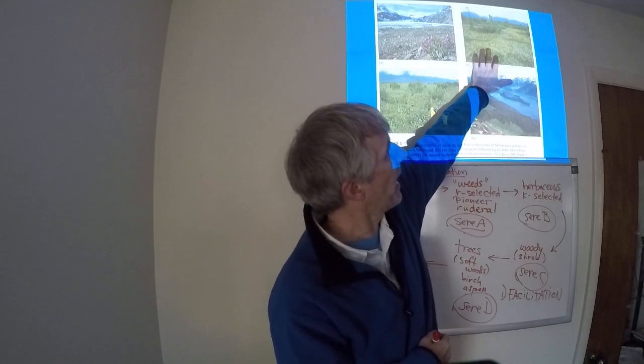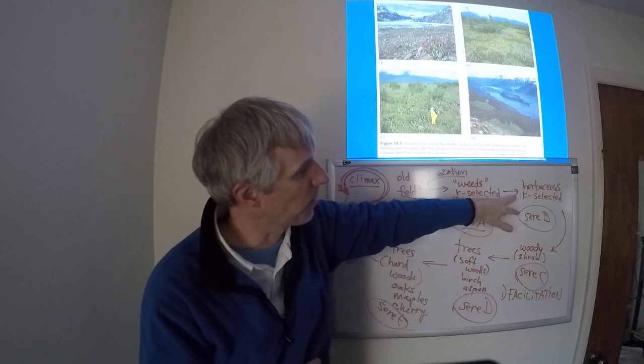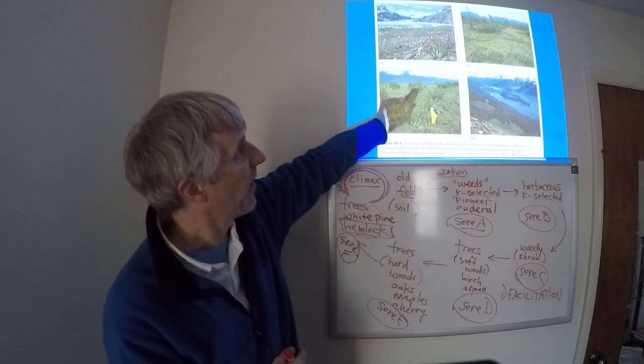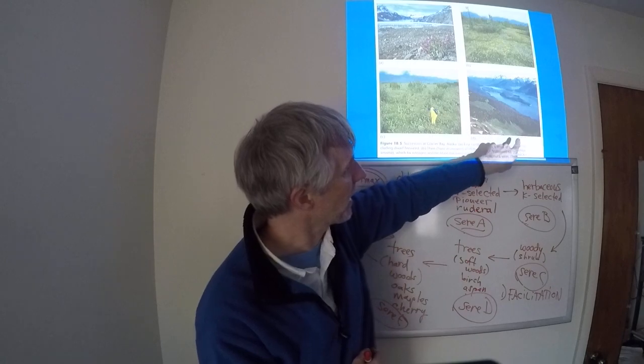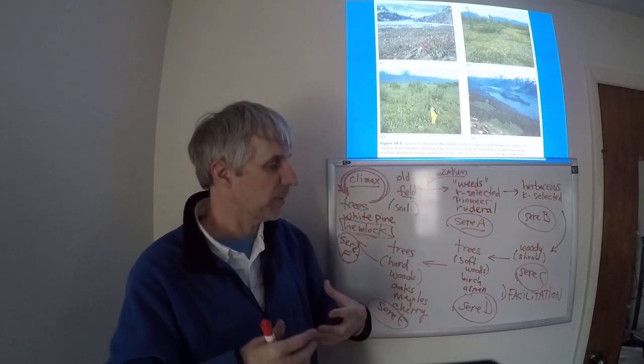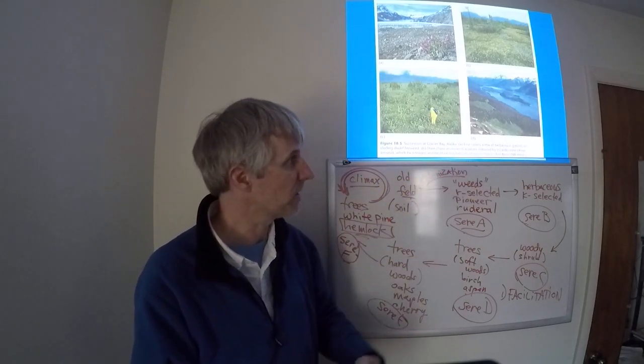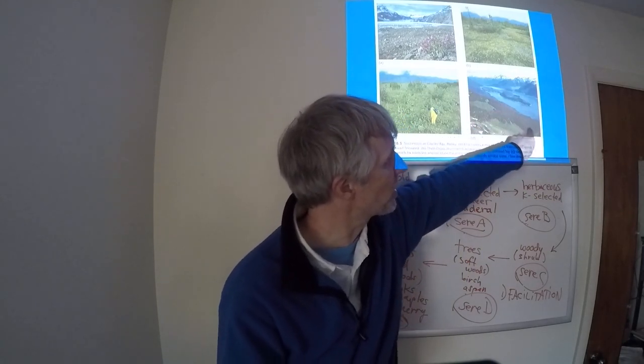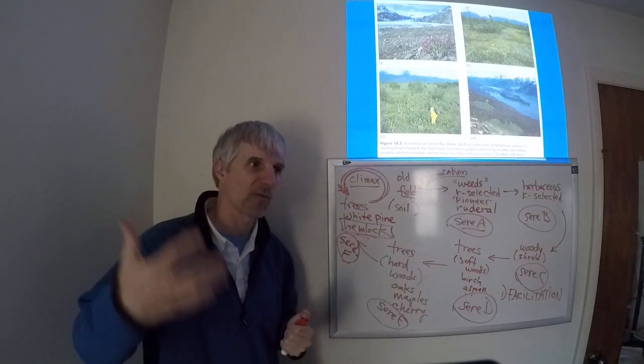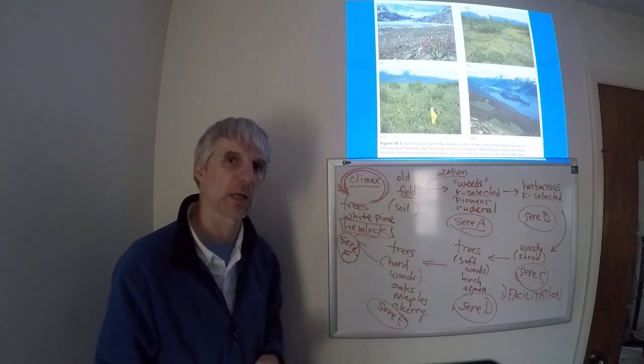Followed by herbaceous species that are more K-selected, followed by these kind of shrubs that ultimately leads to what would be the climax species in Glacier Bay, are these spruce trees here, which represents the final sere in this long succession model.